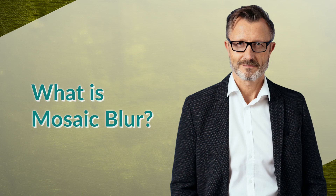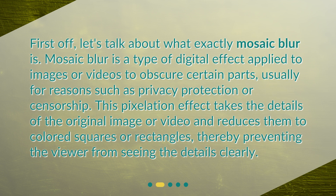What is mosaic blur? First off, let's talk about what exactly mosaic blur is. Mosaic blur is a type of digital effect applied to images or videos to obscure certain parts, usually for reasons such as privacy protection or censorship. This pixelation effect takes the details of the original image or video and reduces them to colored squares or rectangles, thereby preventing the viewer from seeing the details clearly.